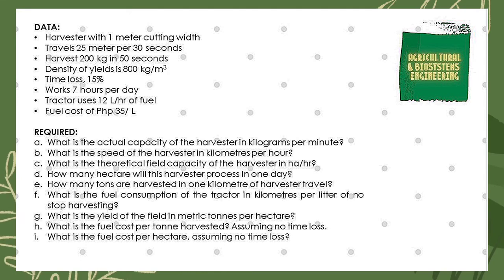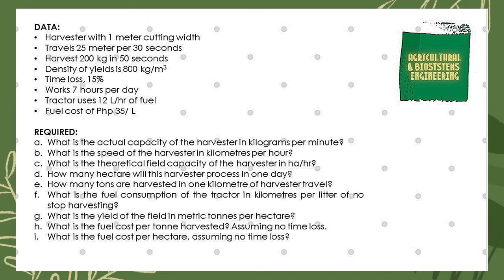The analysis data are the following: a harvester with one meter cutting width travels 25 meters per 30 seconds, harvests 200 kilograms in 50 seconds, density of yields is 800 kilograms per cubic meter, time loss is 15 percent, and works seven hours per day.